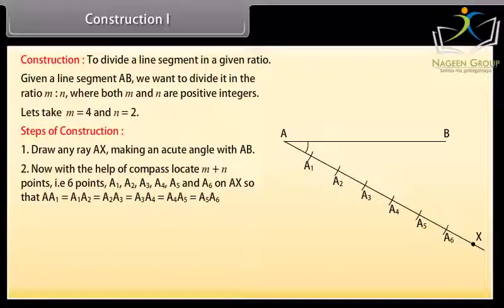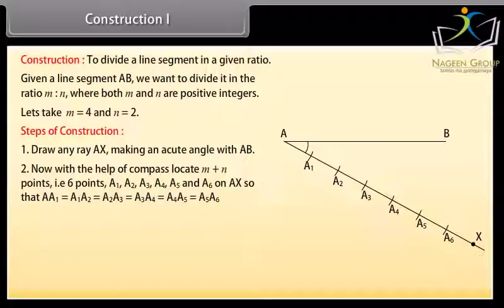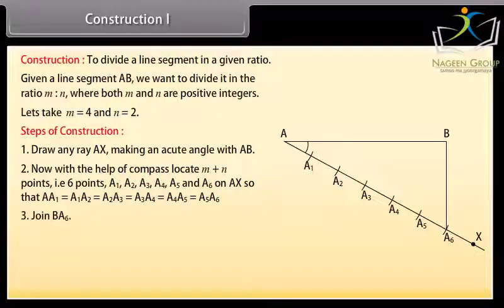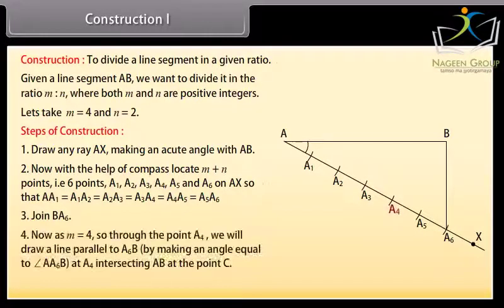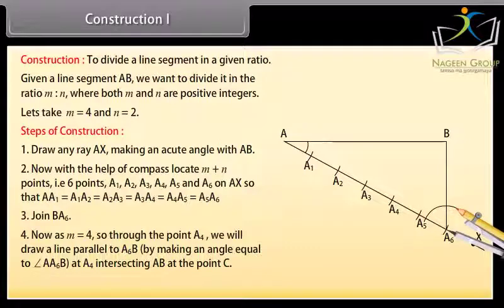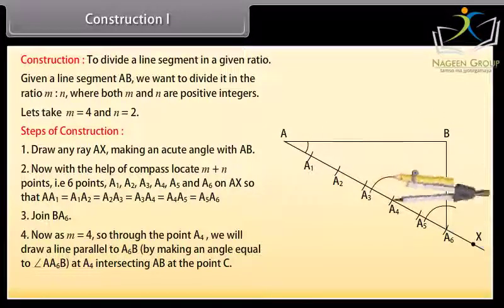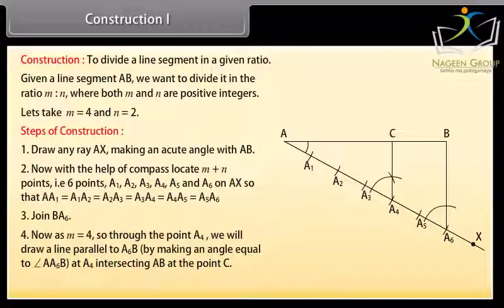Locate the points so that AA1 equals A1A2 equals A2A3 equals A3A4 equals A4A5 equals A5A6. Join B to A6. Then draw a line through A4 parallel to A6B, intersecting AB at the point C.